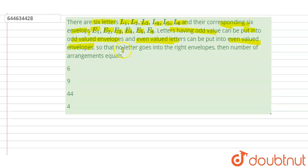That is E2, E4, E6, so that no letter goes into the right envelopes, means that no letters will get into the correct envelope. So we have to find the number of arrangements, how many arrangements can be there.